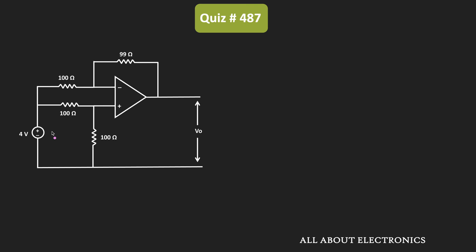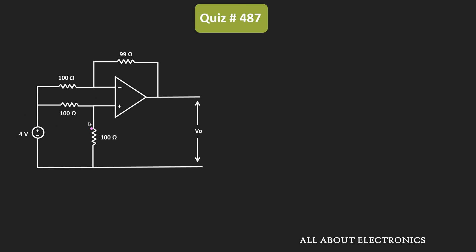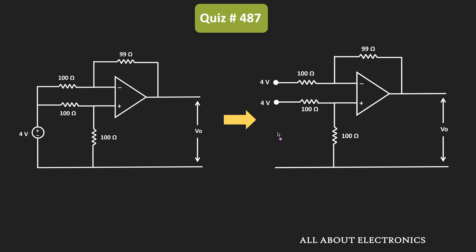In this circuit, this 4V voltage source is shared between these two resistors. So equivalently, the same circuit can be drawn like this. Basically, the given circuit is the difference amplifier, and now we can easily find the output voltage.